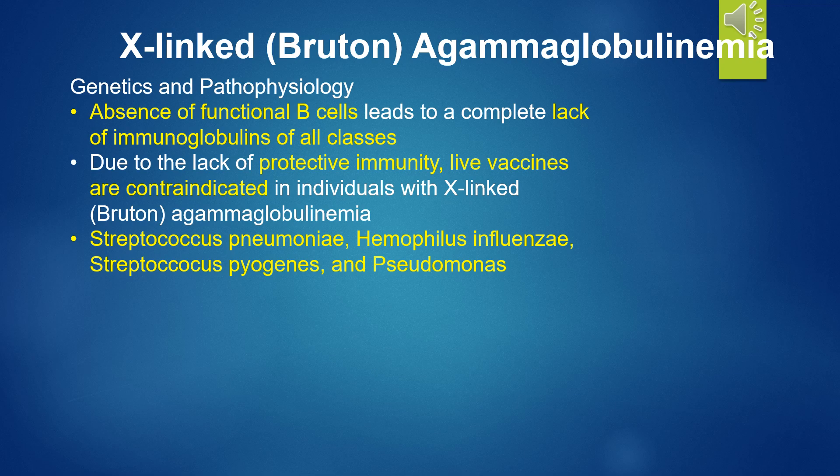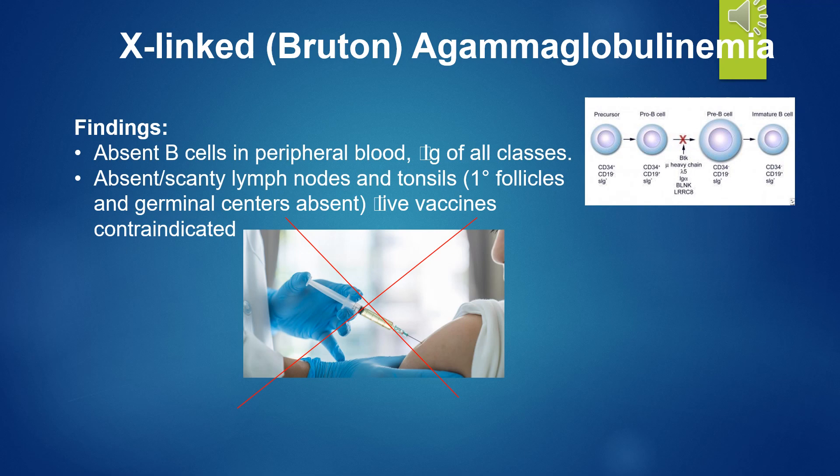Common infections are caused by Streptococcus pneumoniae, Haemophilus influenzae, Streptococcus pyogenes, and Pseudomonas. Key findings of XLA include absent B-cells in peripheral blood, significantly reduced or absent serum immunoglobulin levels, and absent or scanty lymph nodes and tonsils.